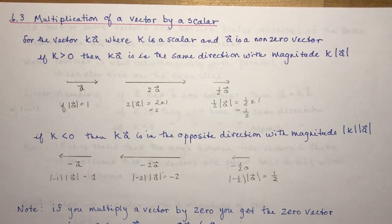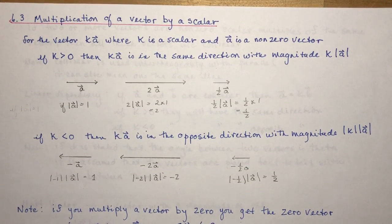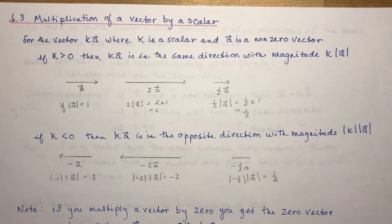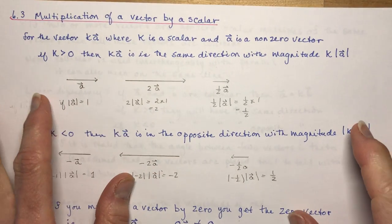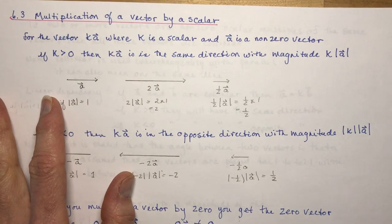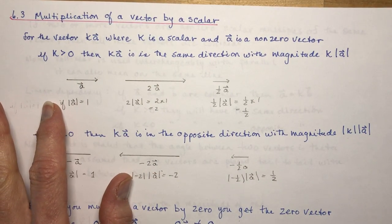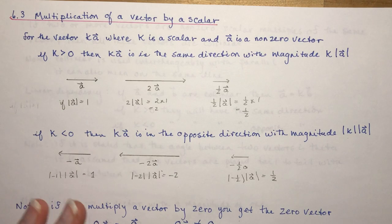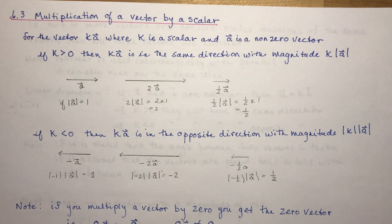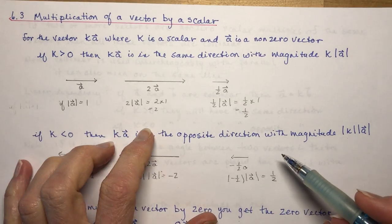Section 6.3 is multiplication of a vector by a scalar. A scalar is just a number. Some of this is read out of your textbook, but I don't think it's explained as well in words as with a little picture, so I'm going to give you some little visuals to go with it.